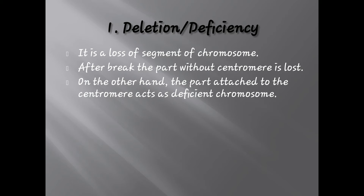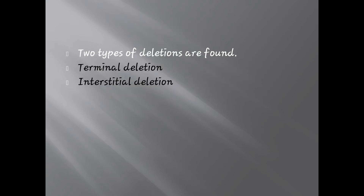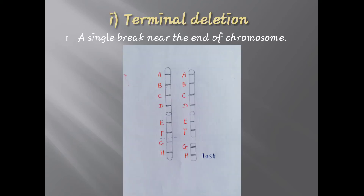After a break, the part without the centromere is lost, while the part attached to the centromere acts as the deficient chromosome. There are two types of deletion: terminal deletion and interstitial deletion. In terminal deletion, a single break occurs in the chromosome at the end, that is towards the terminus.